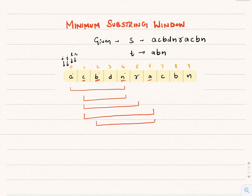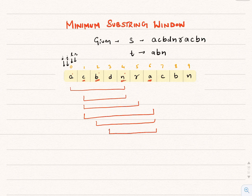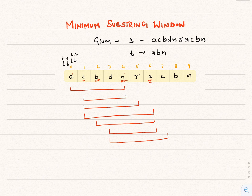We shrink again from the left. The window becomes index 3 to index 6, but now it contains only N and A — missing B. We shift the right pointer to index 7, giving index 3 to index 7, which still has only N and A. Shifting right again gives us index 3 to index 8, which now has N, A, and B.